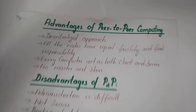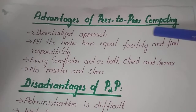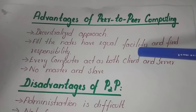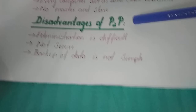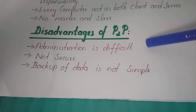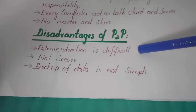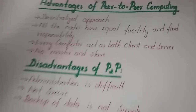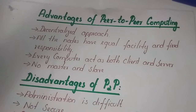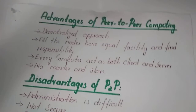The advantages of the peer-to-peer model: it is a decentralized approach; all nodes have equal facility and fixed responsibility; every computer acts as both client and server; there is no master and slave system. Disadvantages: administration is difficult because the entire web resource is distributed among a number of peers and it is not secured. Backup of data is not simple in the peer-to-peer model. In this session, we have discussed the architectural model of a distributed system. I hope you understand the concept very well. Please subscribe to the channel. Thank you.